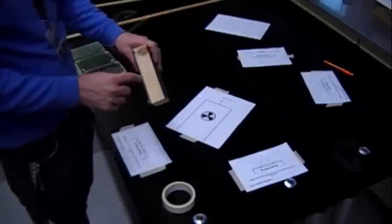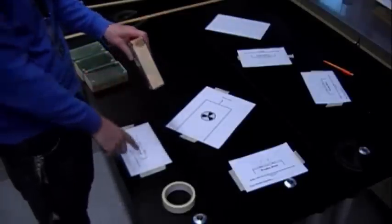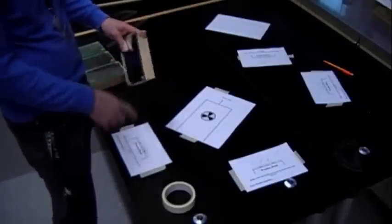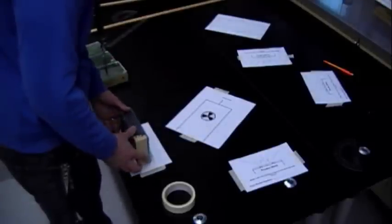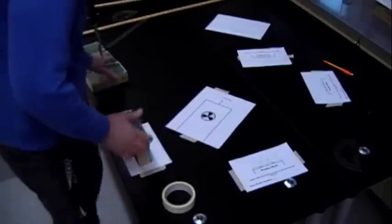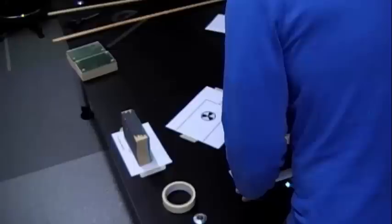Once everything is secured to the table, you'll want to take your mirrors and line them up with the pictures of the mirrors on the half sheets. Make sure the front of the mirror lines up with the front on the description and the back lines up with the back. Again, carefully place these on each piece of paper.